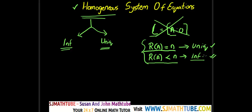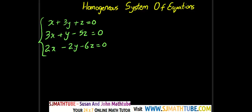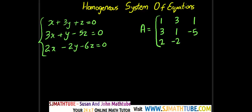So let's work out one problem. The question is: solve the system x plus 3y plus z equal to 0, 3x plus y minus 5z equal to 0, and 2x minus 2y minus 6z equal to 0. The system is homogeneous because the constants are all equal to 0. So no need to write the augmented matrix — just find the rank. A equals the matrix with rows [1, 3, 1], [3, 1, −5], and [2, −2, −6].